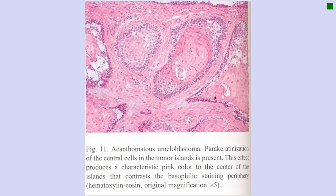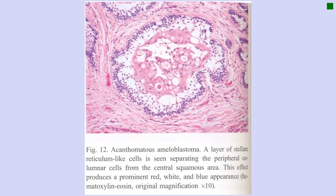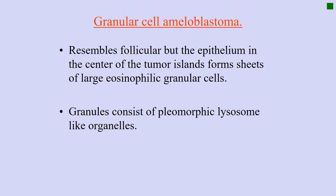Histologically, you see tall columnar ameloblast-like cells with stellate reticulum-like cells in the middle that have undergone squamous metaplasia — they clearly look like squamous cells with centrally placed nuclei. The keratin pearls formed here can give a misleading appearance very similar to squamous cell carcinoma, so it is very important to differentiate it from that.